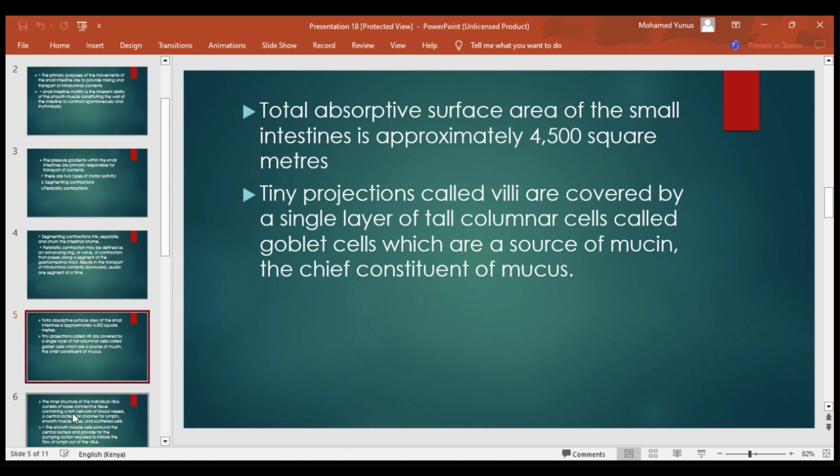The total absorptive surface area of the small intestine is approximately 4,500 square meters. This helps with the rapid absorption of food within our gut.